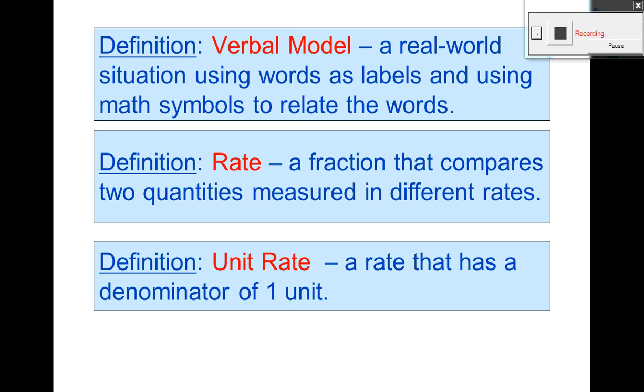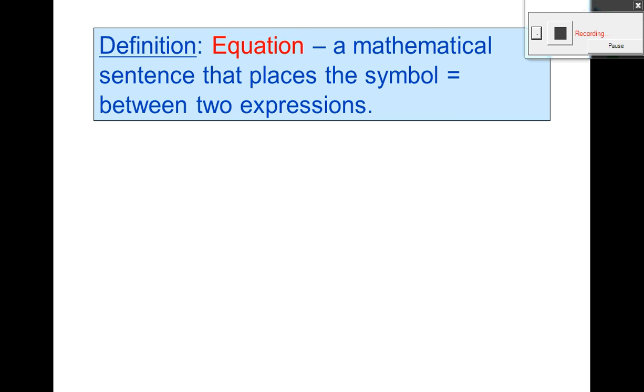The unit rate is a rate that has a denominator of one unit. And we had an equation. It's a mathematical sentence that places a symbol equals between two expressions. So that is done already.